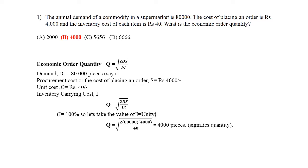This is an easy question for one or two marks — do not lose those marks. The only thing to remember is the formula: Q equals under root of (2 × demand × procurement cost) divided by (IC), where IC is inventory carrying cost multiplied by unit cost.